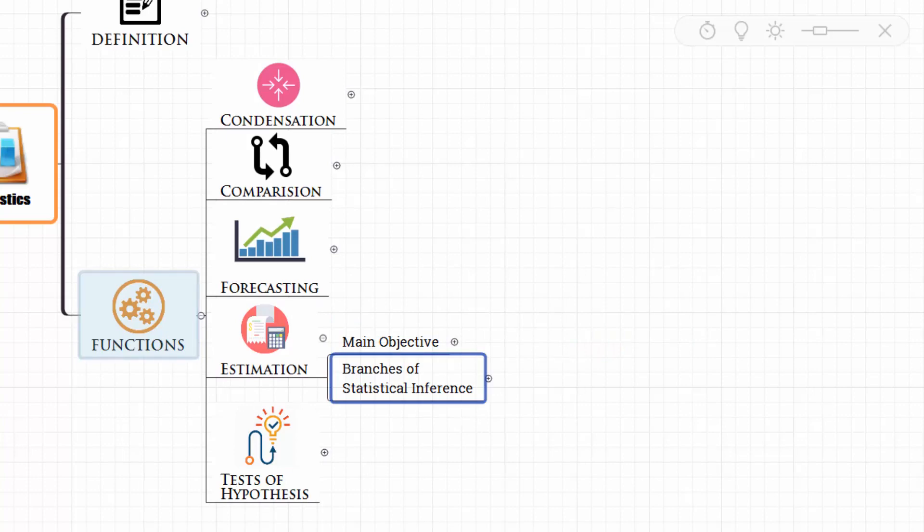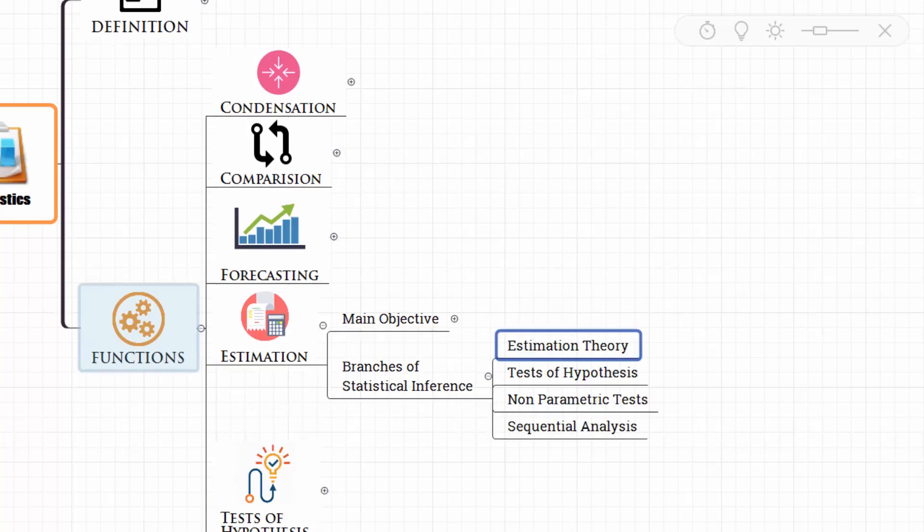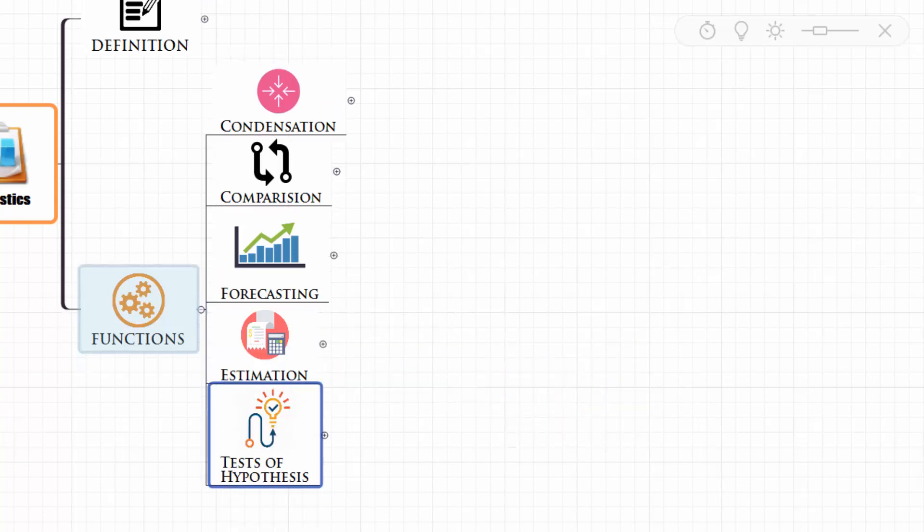For this estimation, we have branches of statistical inference: estimation theory, test of hypothesis, non-parametric test, and sequential analysis. Let us not worry about these technical names. We will understand them gradually in later sessions. Then finally comes test of hypothesis.